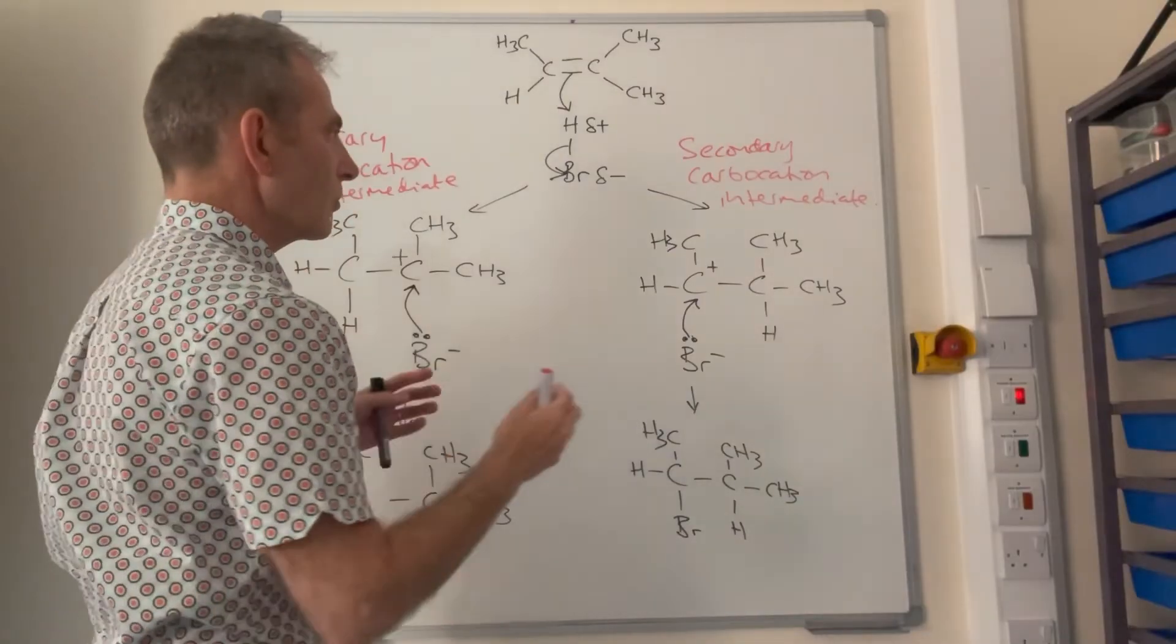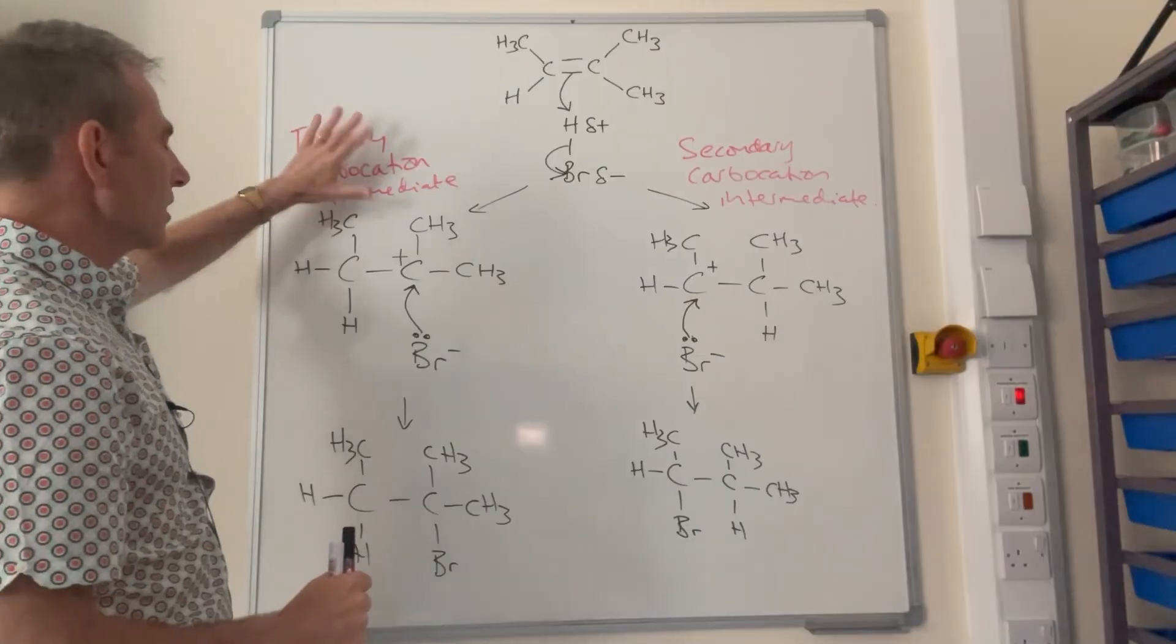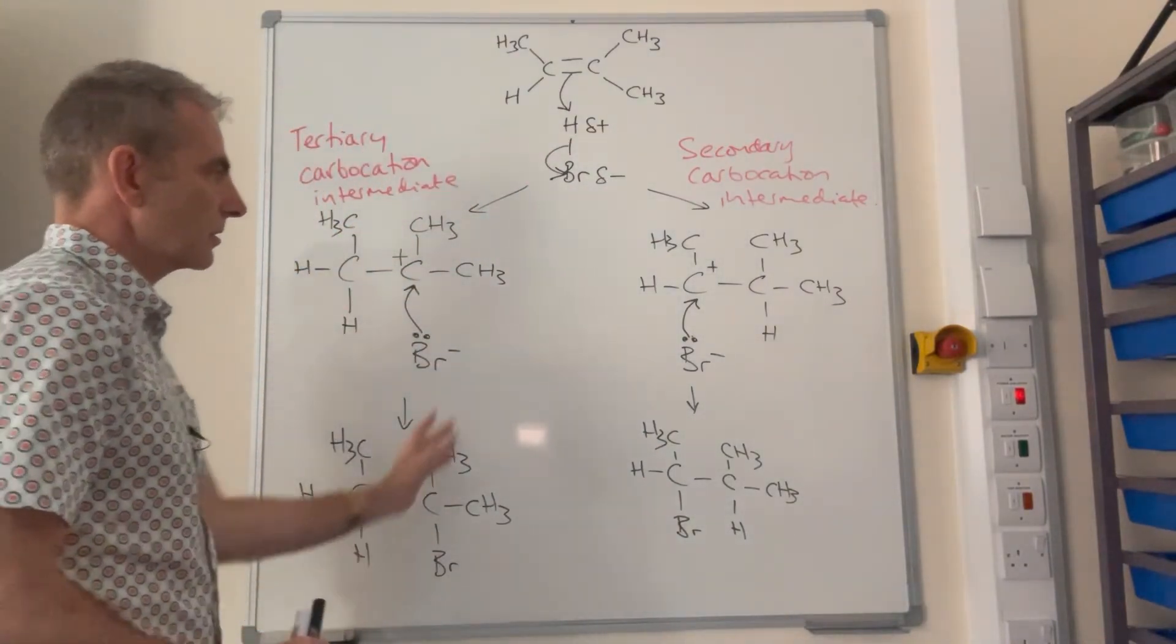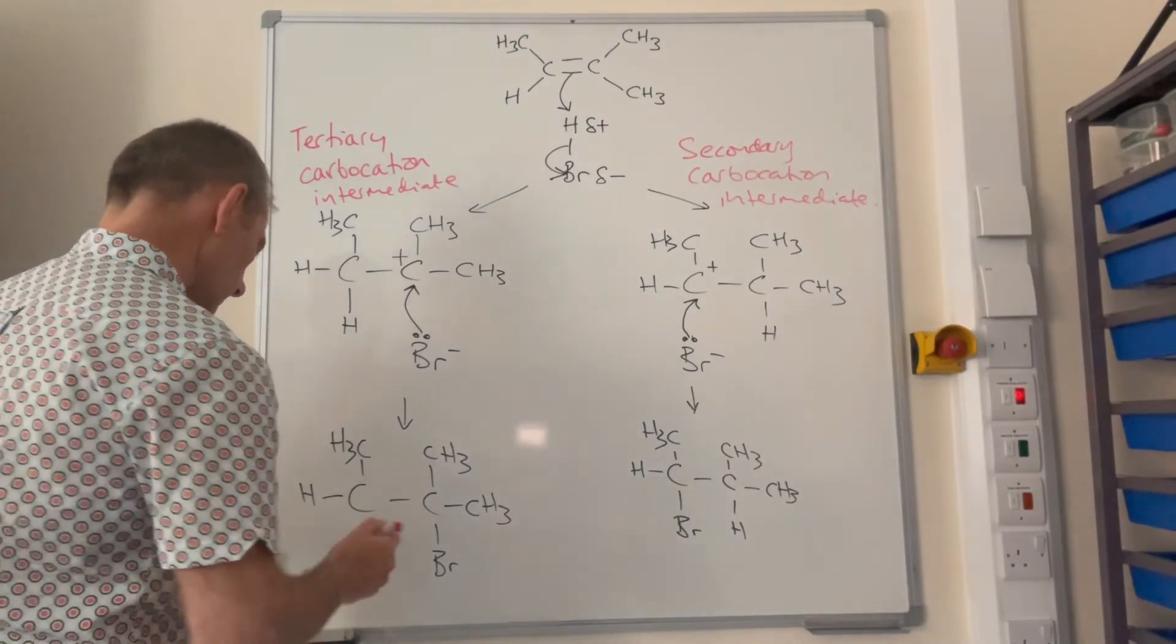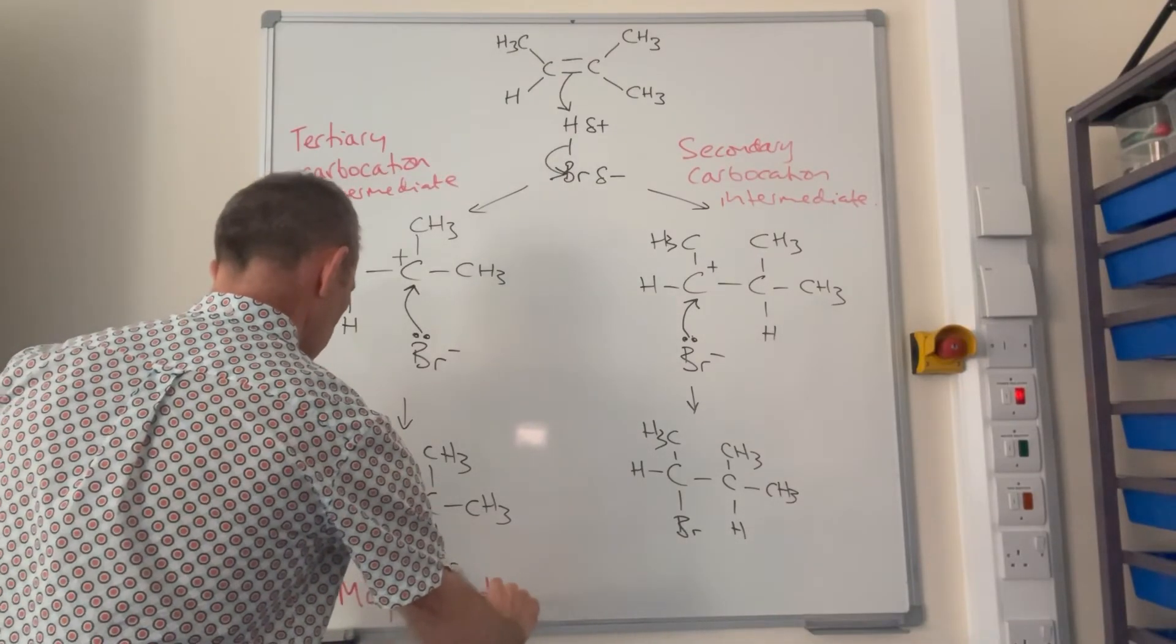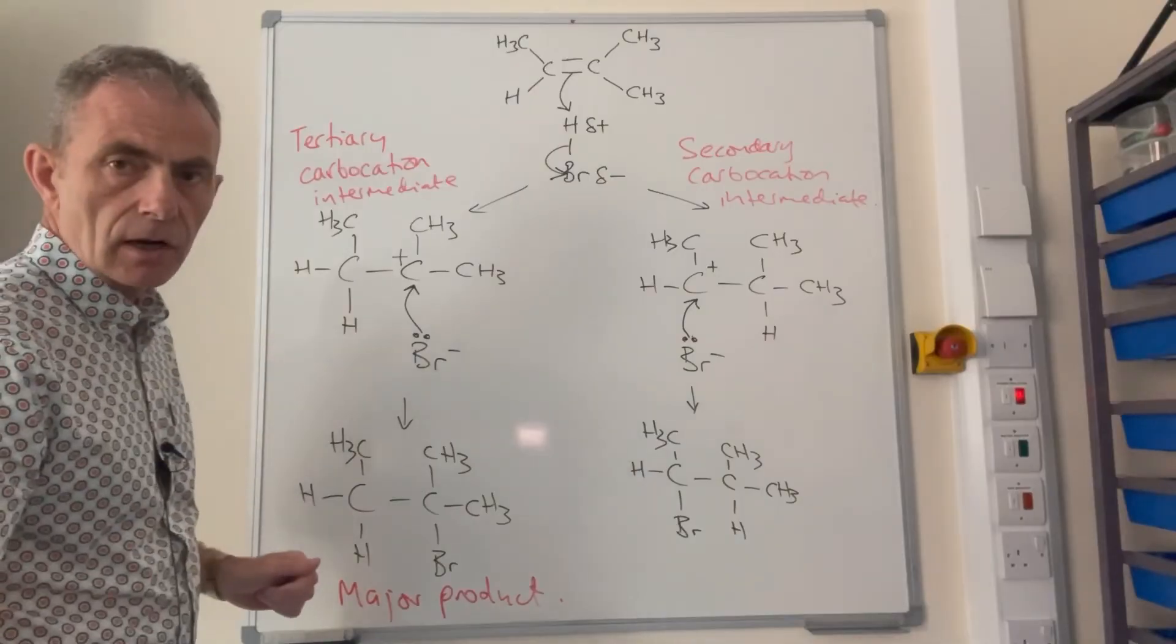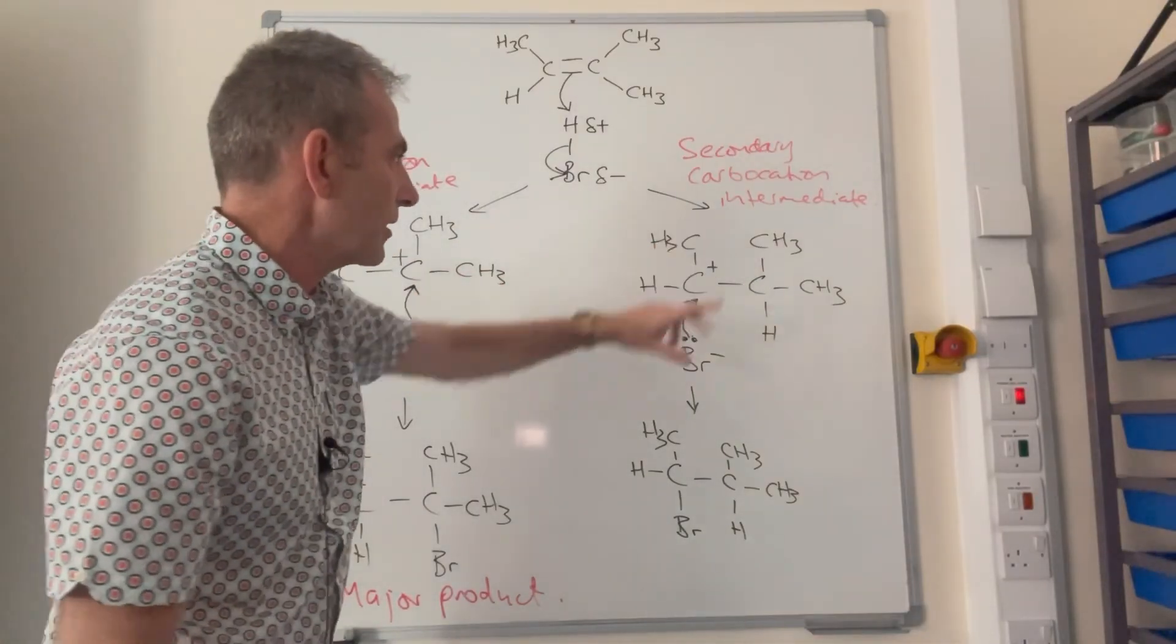So we need to know which one is more stable out of those two, and it's this one here, it's the tertiary one. So tertiary carbocation intermediates are more stable than secondary ones. So more of this is going to happen than this one. So this here is the major product. So all you would need to say is your answer is the major product forms from the more stable tertiary carbocation intermediate. But it's always a good idea to sort of annotate your mechanism, like I've done there, because whoever's marking your work will give you credit for that.